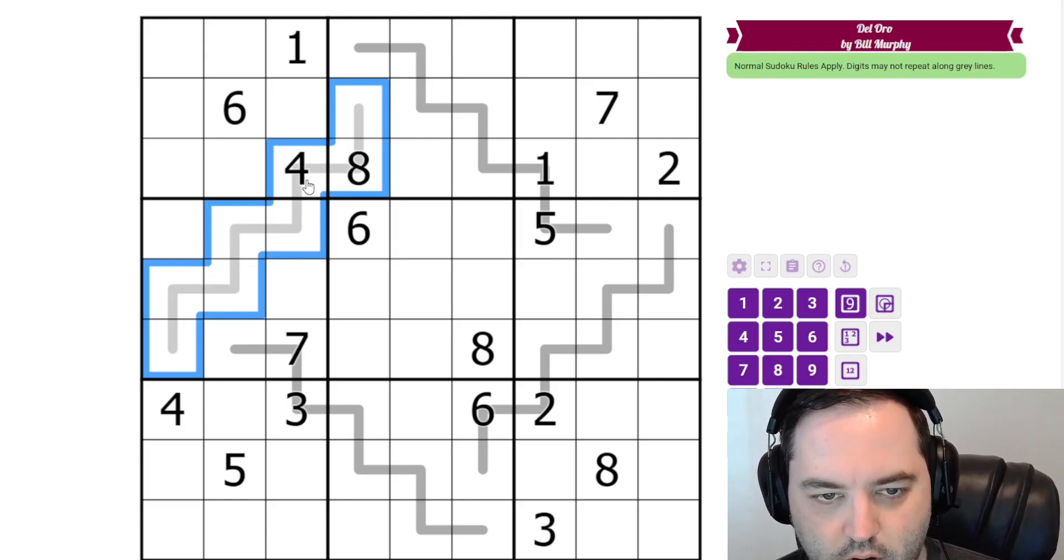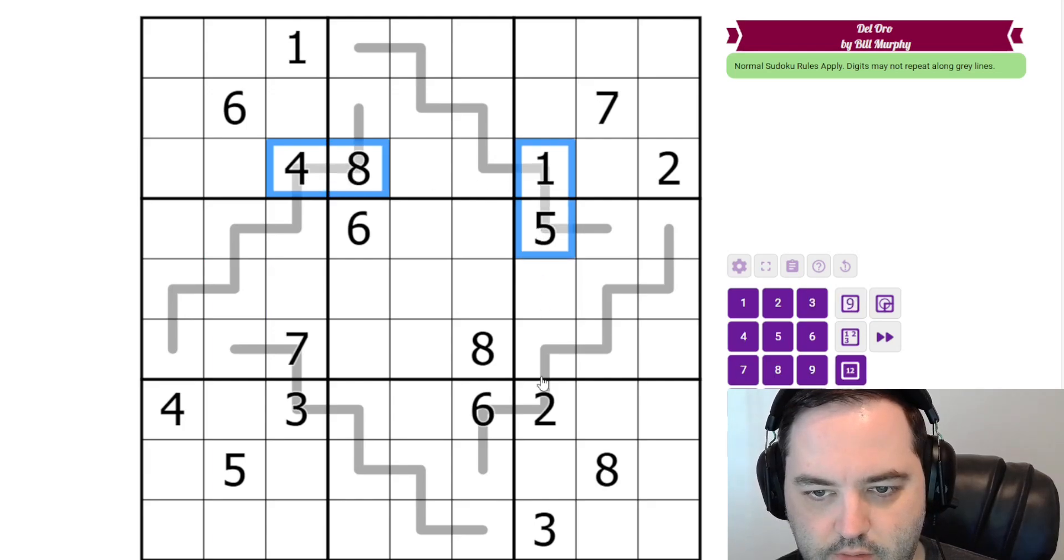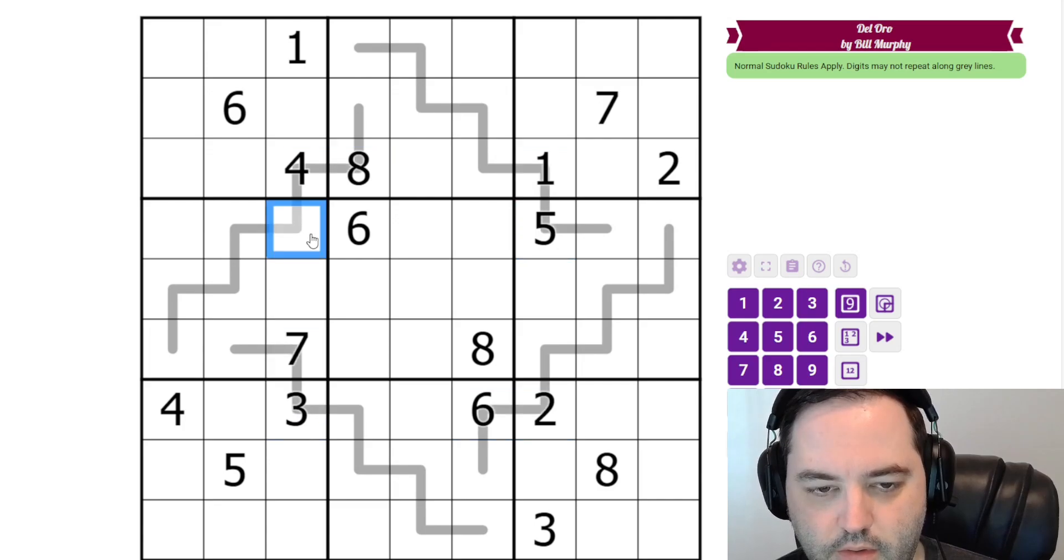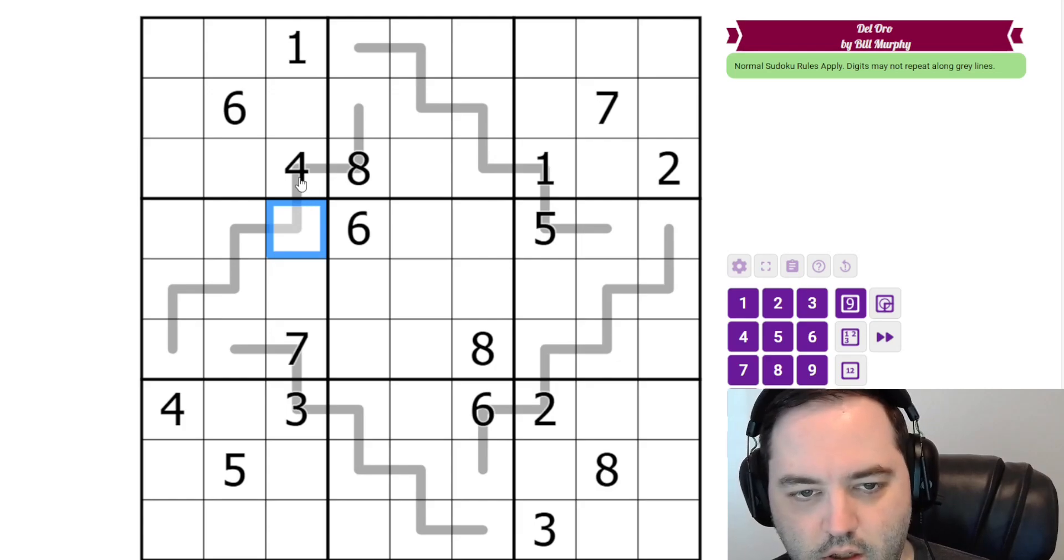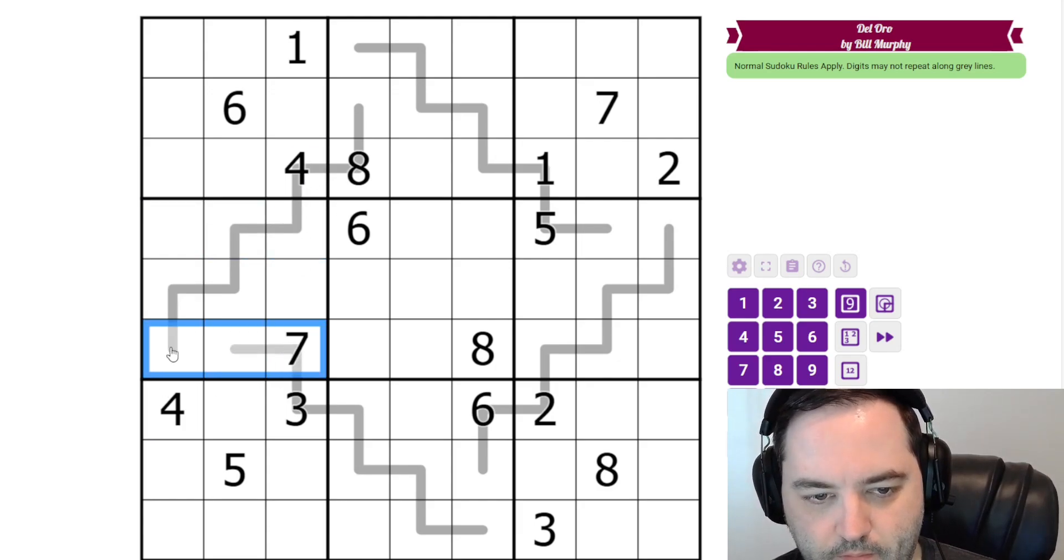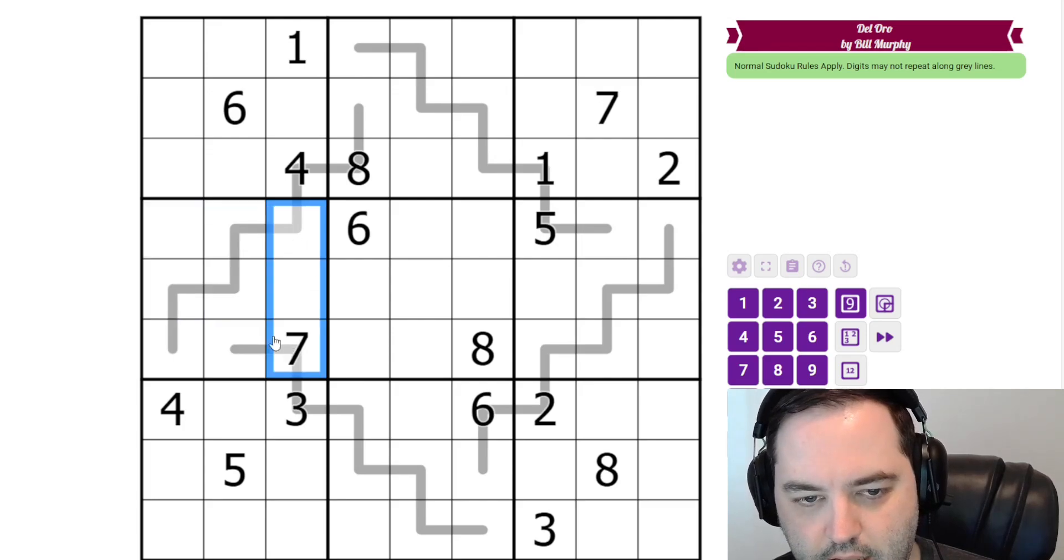We're going to start looking at these digits on gray lines and how they interact with the other box that is mostly taken up by that line. 4 in this box, in box 4, already can't go in these cells. But because of this line, it also can't go in these cells. So that only leaves one place for it.